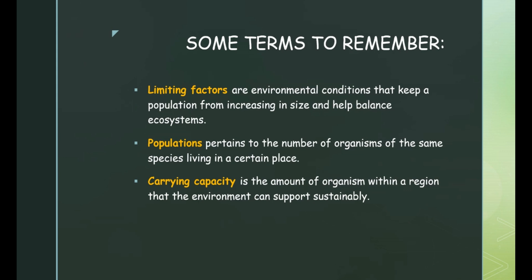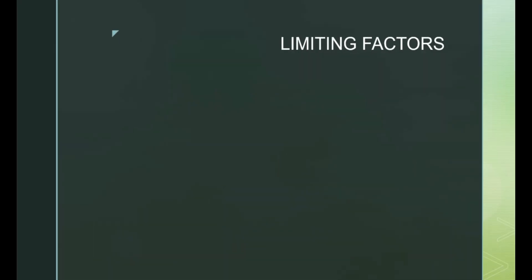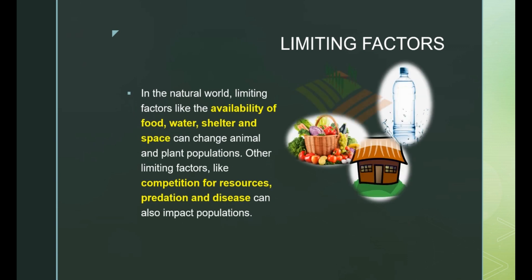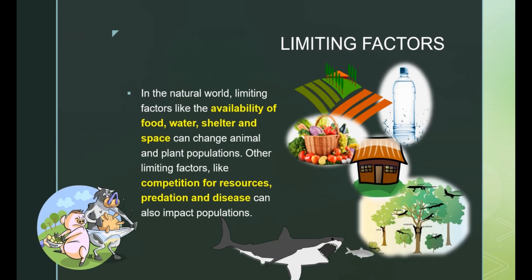Let's talk about limiting factors. In the natural world, limiting factors like the availability of food, water, shelter, and space can change animal and plant populations. Other limiting factors like competition for resources, predation, and disease can also impact population.